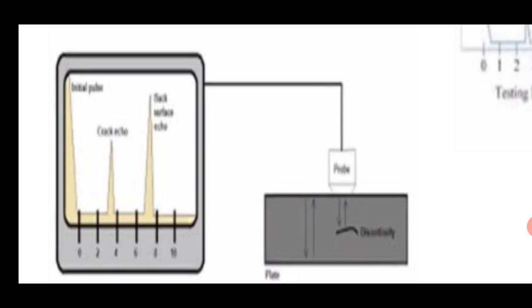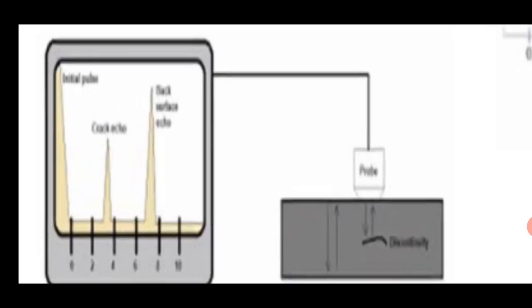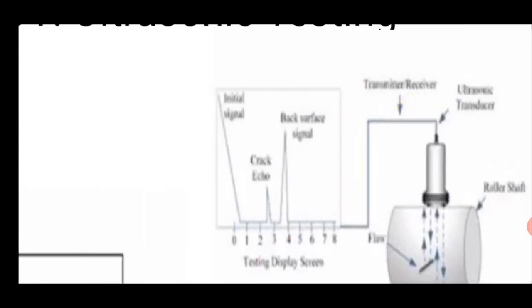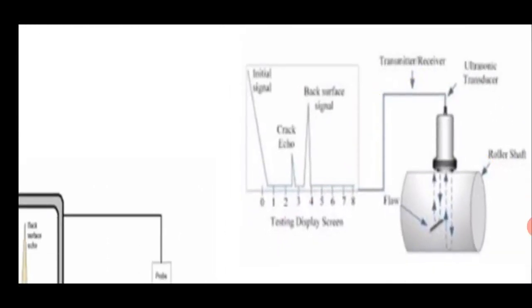the ultrasound passes through metal but gets reflected by air. If there is any crack with trapped air it gives a back echo. You can see that in between the initial pulse and the back echo, an additional echo appears — this indicates an internal flaw. Because the CRT is calibrated, you can determine at what distance the crack is and what its size is. Here you can also see a crack shown as a black tapered line.